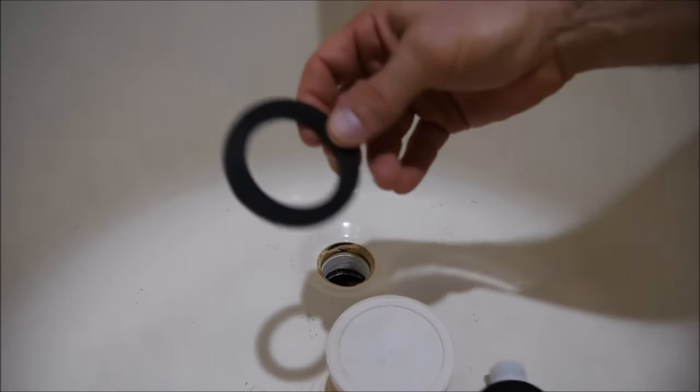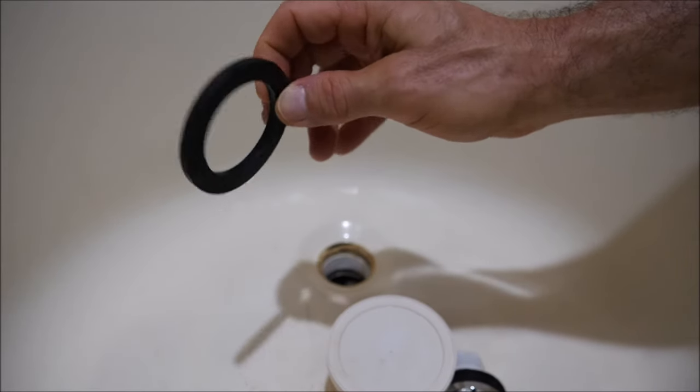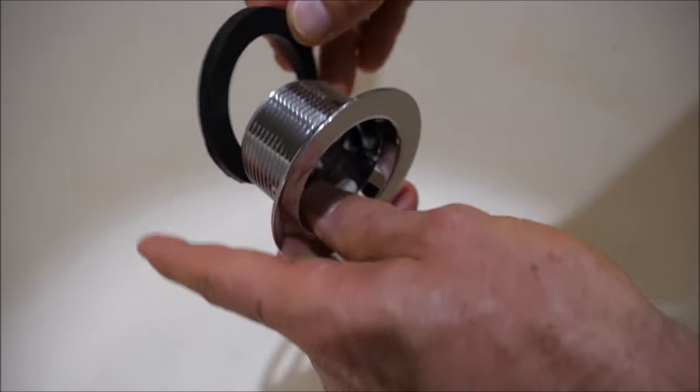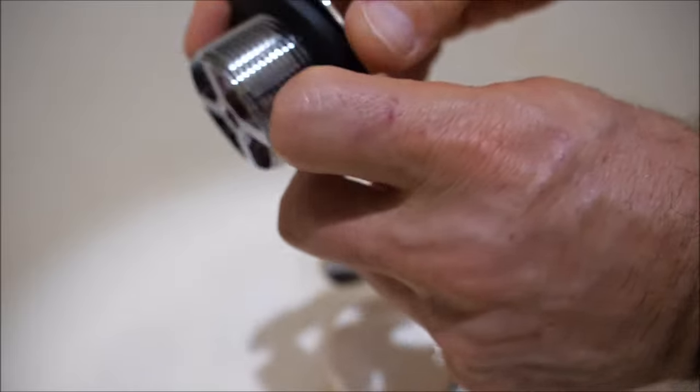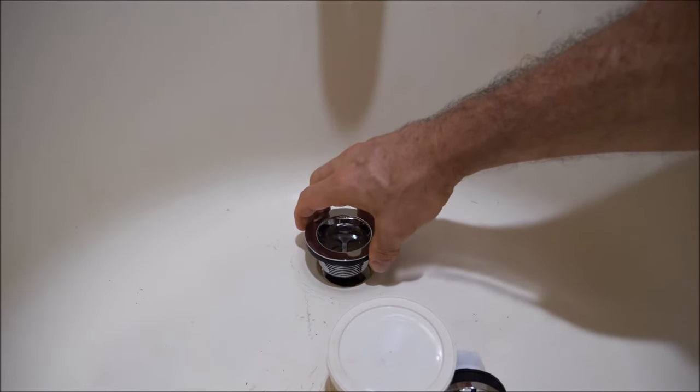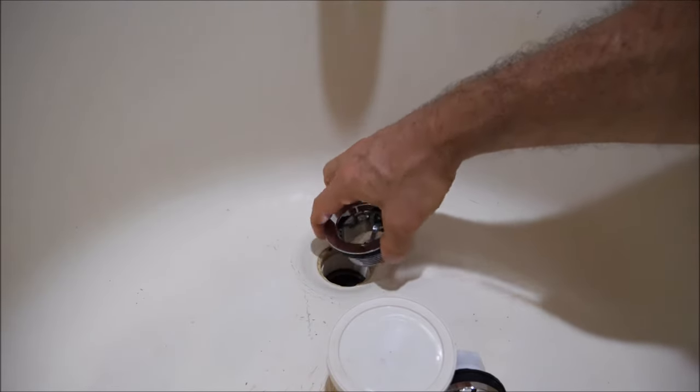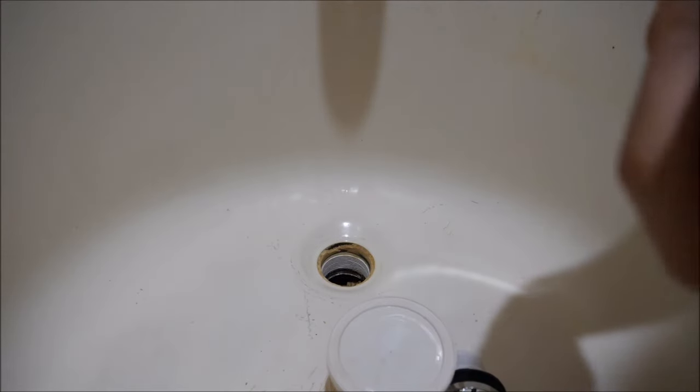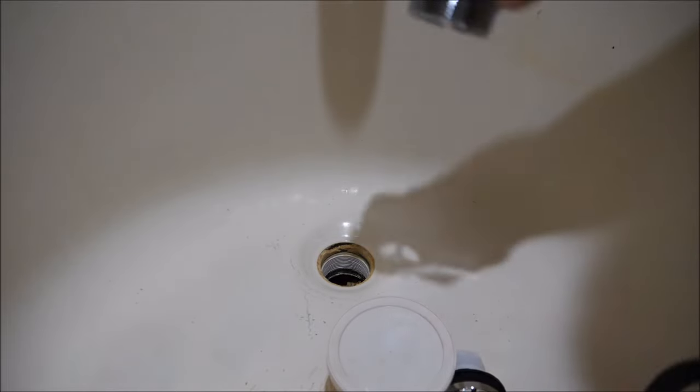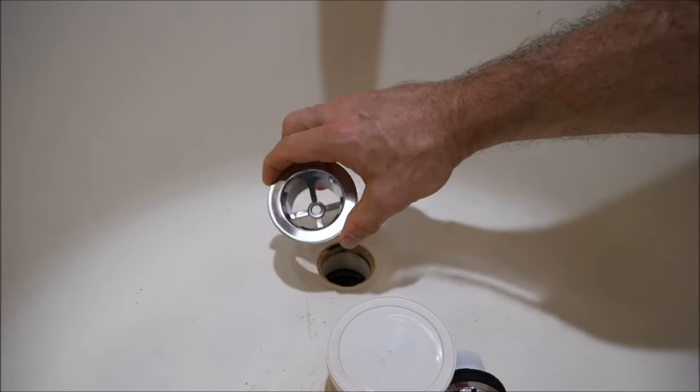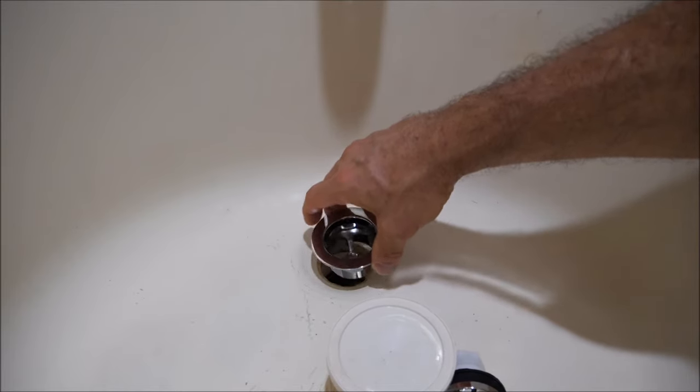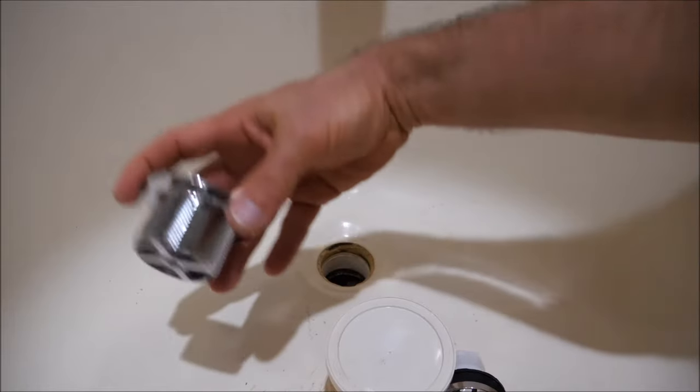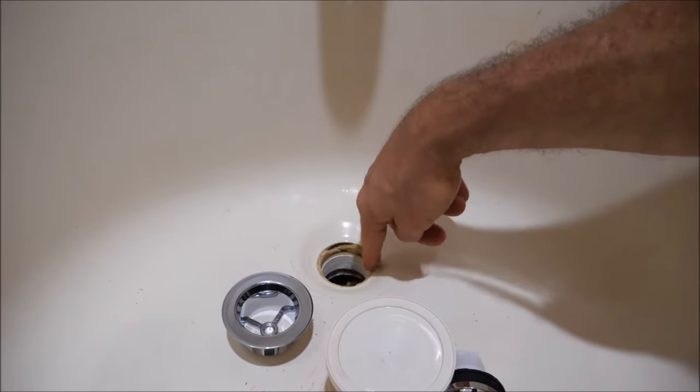This particular replacement drain also shipped with this rubber gasket or bushing that can be used in lieu of the plumber's putty, but with that thick gasket underneath the flange, when this is screwed in it's still going to be raised up, and I don't want to have that little surface or that area that might collect standing water. With the plumber's putty, it's going to allow me to screw this new drain in all the way, compress the plumber's putty, and create a waterproof seal or barrier in between it and the surface of the tub.